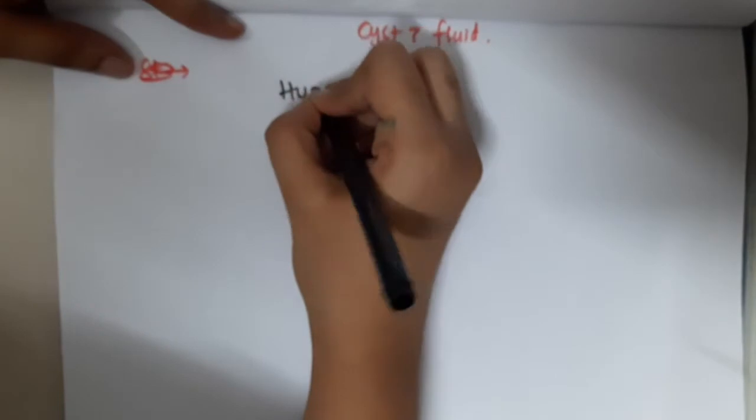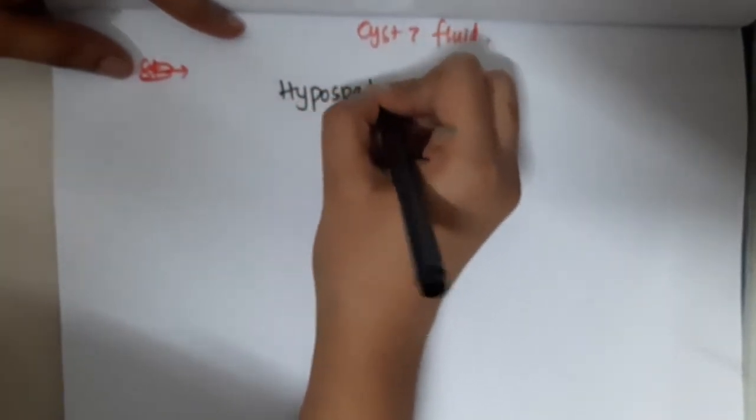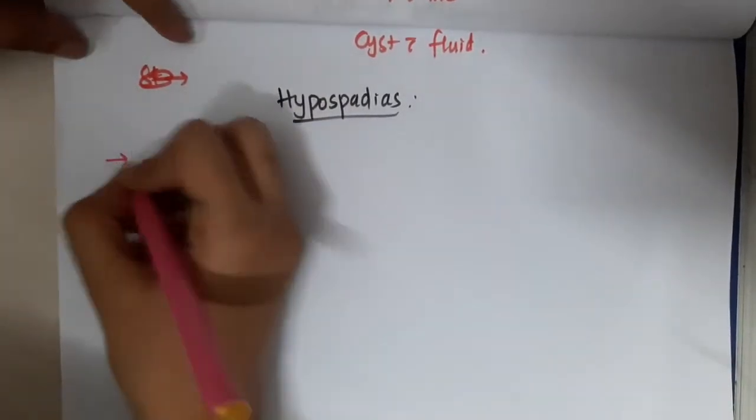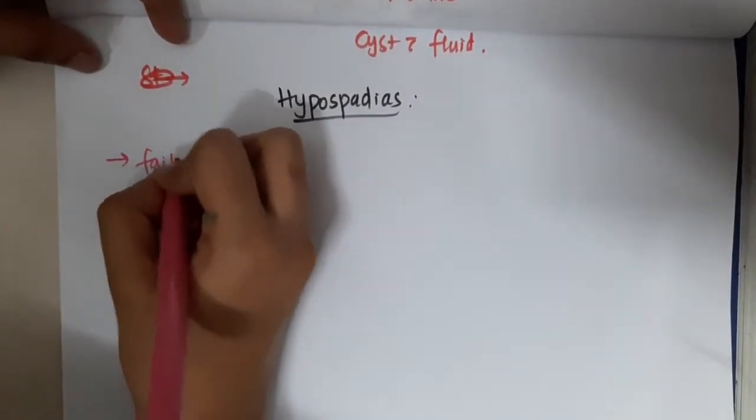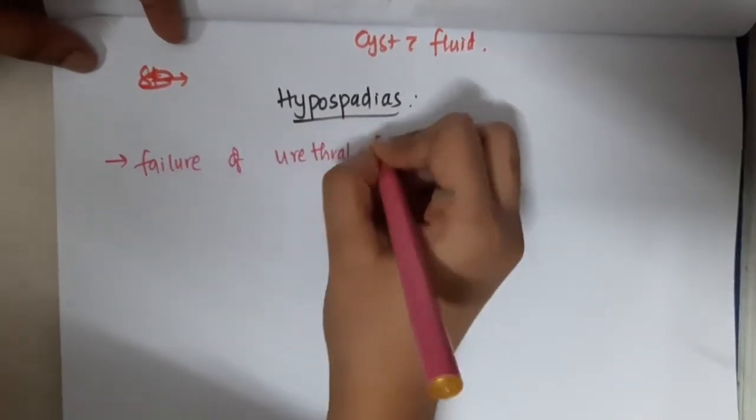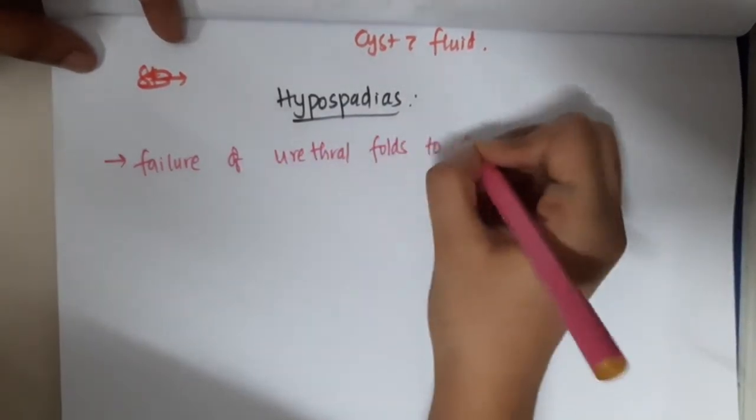Let us now learn some important points about hypospadias. Hypospadias occurs due to the failure of urethral folds to fuse properly.